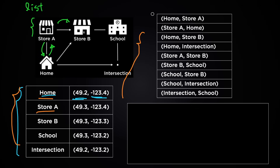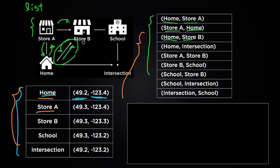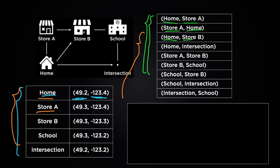From this list-like information you can tell that you can go from home to store A, from store A to home, and home to store B, and so on. But you can't go from store B to home because it's a one-way street, so there's no path from store B to home in this list.